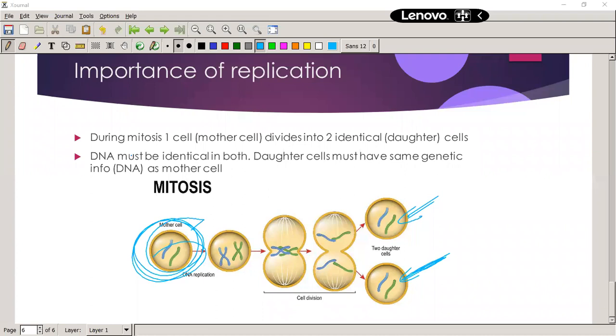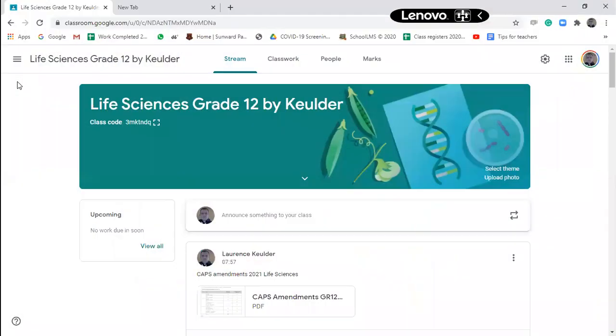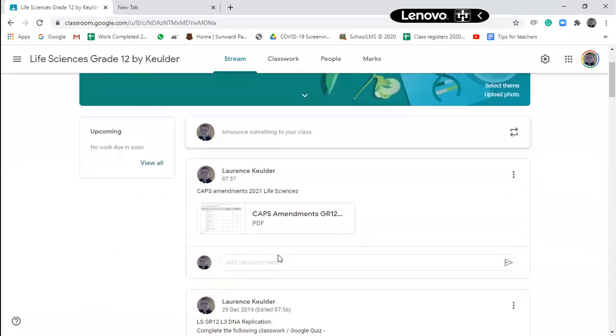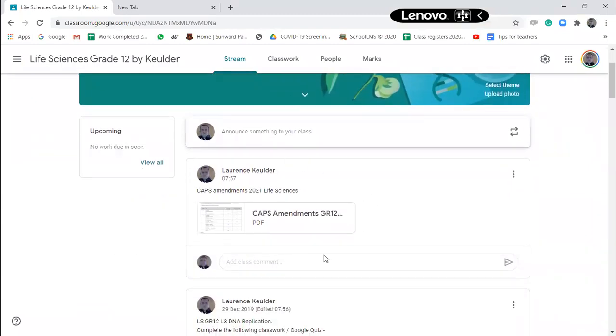Before Monday's lesson, so tomorrow, today and tomorrow you're going to be busy with that. Let's quickly go to my Google Classroom again. There we go. On Google Classroom, please, there's some, there's the amendments on CAPS. So for example, I said the DNA that we're doing now used to be in Paper 2, it's now in Paper 1.